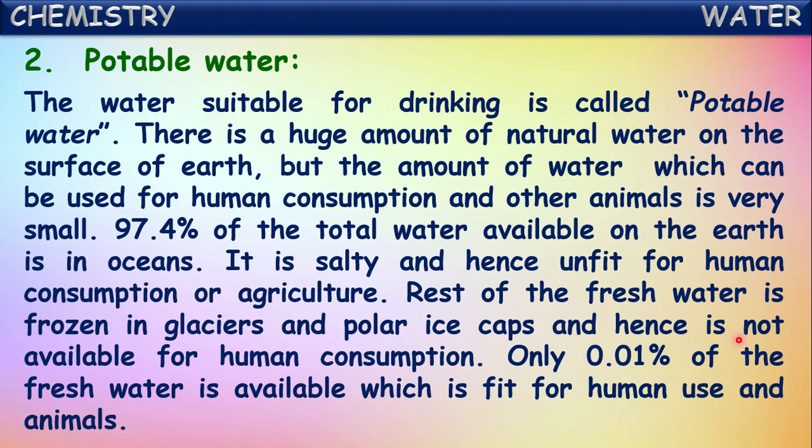There is a huge amount of natural water on the surface of the earth, but the amount which can be used for human and animal consumption is very small. Around three-fourths of the surface is covered by water, but a large amount is in salt water form in the oceans. Only a very small percentage of water is available which is fit for consumption.